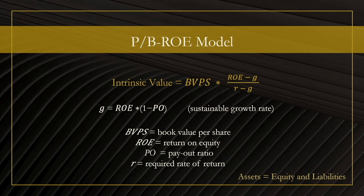Then we have the required rate of return. The required rate of return is the minimum amount of profits an investor will require before he or she is willing to invest in a particular asset class. For example, if you go to a bank and put your money there, you will be expecting a rate of return of, let's say, 1% — that is rather low because there is very little risk involved. The same applies to stocks: to be willing to buy shares, you will require an even higher rate of return because the investment is riskier. Simply put, higher risk and higher reward.